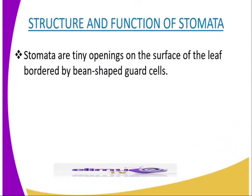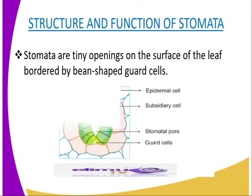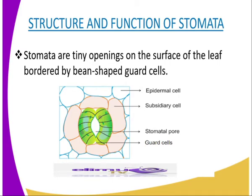So now we go to the structure and function of the stomata, and we can have a diagrammatic representation of the same so that you might understand what I am explaining. The stomata are tiny openings on the surface of the leaf, bordered by bean-shaped guard cells. The guard cells are the only cells of the leaf epidermis that contain chloroplasts.